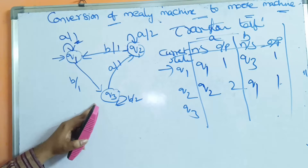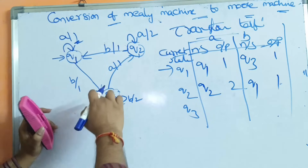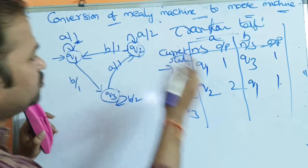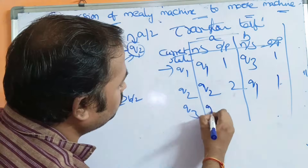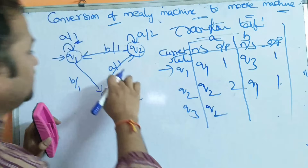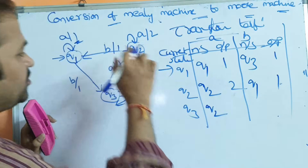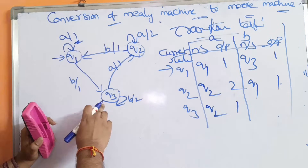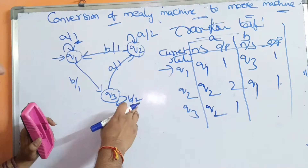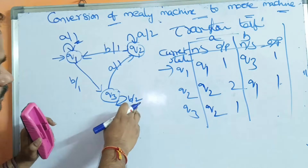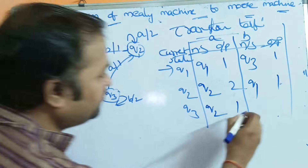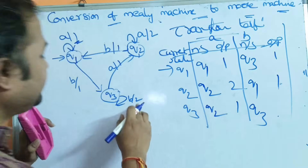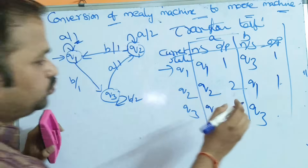Q3 on a goes to Q2, and the output is 1. Q3 on b goes to Q3, and the output is 2.